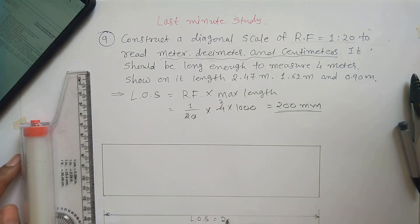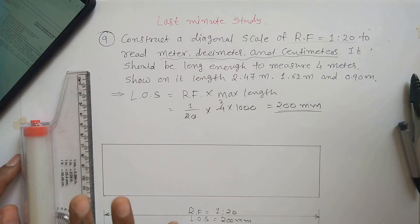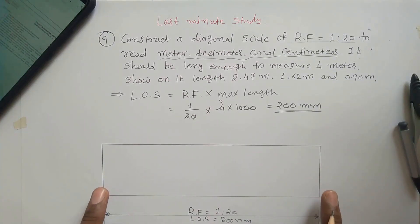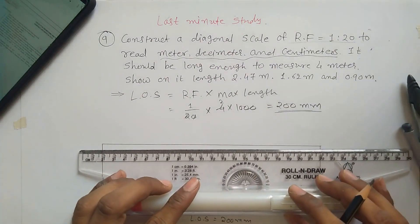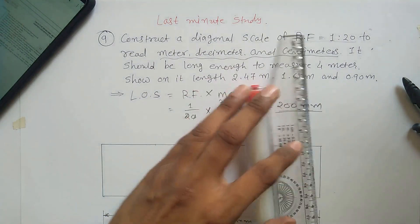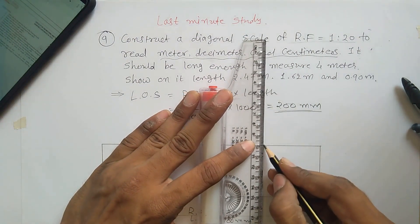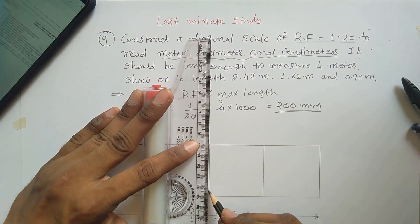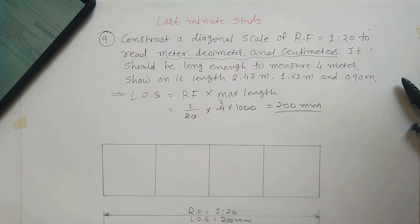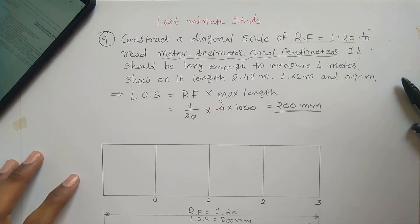The length of scale is 200 mm and RF is equal to 1 to 20. Now, divide this into four equal parts because 20 centimeters represents four meters. Each part is five centimeters. Starting with zero, this is one meter, two meters, and three meters. Write down meters over here.